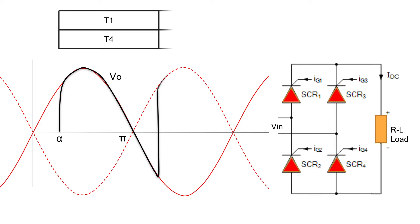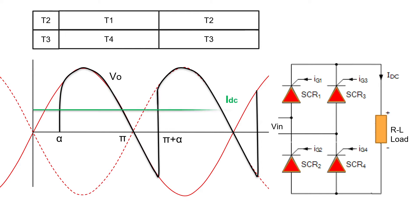The thyristors, thyristor T2 and T3 are fired at an angle pi plus alpha. Again, the solid black line extends and shows the output voltage variation when the output current is constant and ripple-free. I_DC shown by the solid green line is the constant rectified DC current.